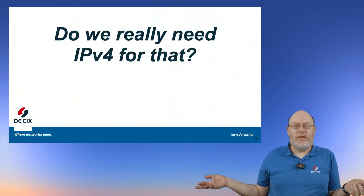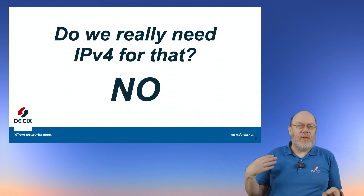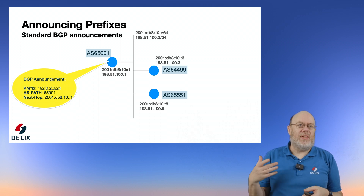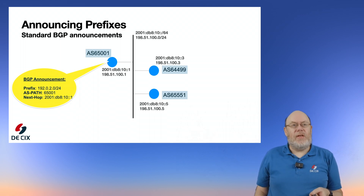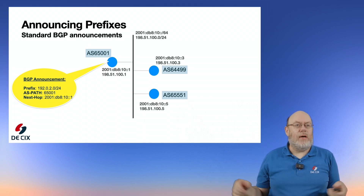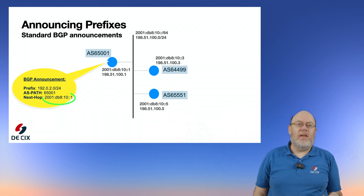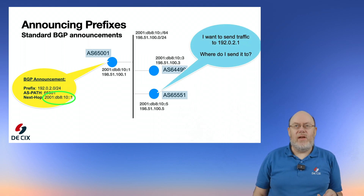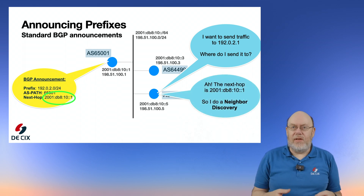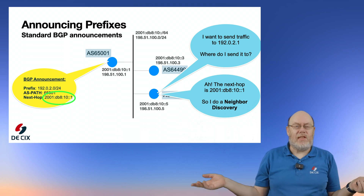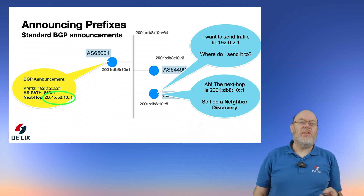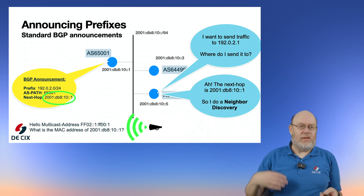But do we really need IPv4 for that? No, we don't. The concept is more than 10 years old — an RFC was published over 10 years ago describing how to do this with IPv6 only. Here we have the same BGP announcement of an IPv4 network, but we send out a next-hop address as an IPv6 address. The router that wants to send traffic sees it has an IPv6 address as a next-hop, so instead of ARP it does neighbor discovery — that's the IPv6 method for finding a MAC address — and it's not broadcasted, it's multicasted.